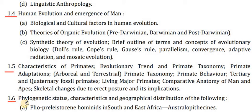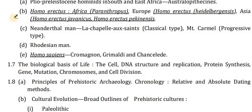Point 1.6 covers the phylogenetic status, characteristics and geographical distribution of early hominids: Australopithecines in South and East Africa; Homo erectus — Pithecanthropus, Paranthropus, Homo erectus heidelbergensis in Europe, Homo erectus javanicus and Homo erectus pekinensis in Asia. Also covered are Neanderthal man, La Chapelle-aux-Saints classical type, progressive types, Rhodesian man, Homo sapiens, Cro-Magnon, Grimaldi, and Chancelade.